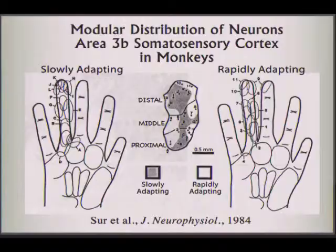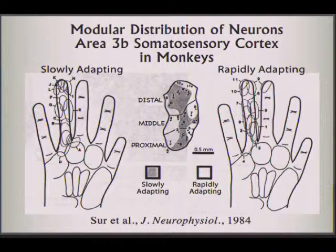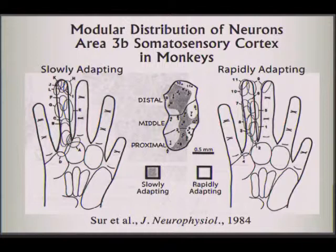This data supports that kind of segregation — the same digit is represented within that region twice, once for one kind of receptor and once for the other. Another good example is the duck-billed platypus: looking at area 3B, it has input from electroreceptors and input from touch receptors, and they divide up 3B territory in a similar manner, so neurons respond to one of those inputs or the other.